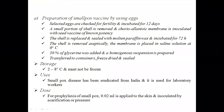Hello everyone, this is a D Pharmacy Pharmaceutics One class, subject code 1.1T, Unit 5. In this class we are going to discuss the preparation of smallpox vaccine by using eggs. The eggs of hen are examined and selected for fertility.